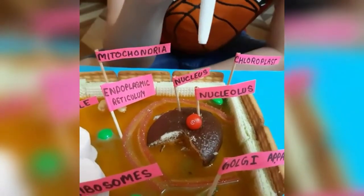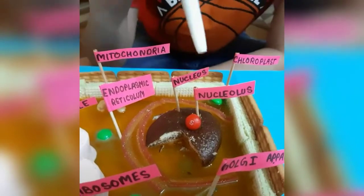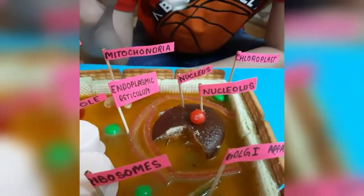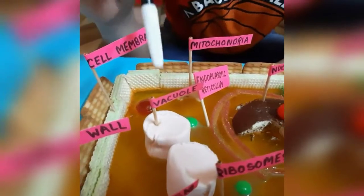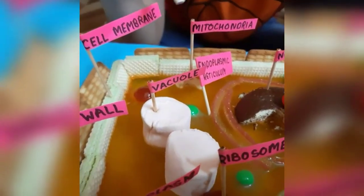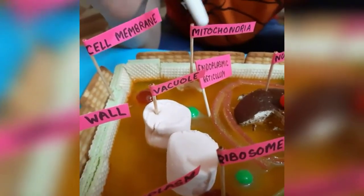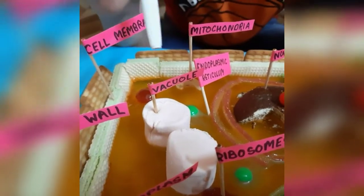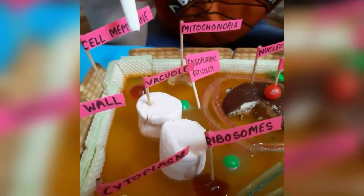Inside the nucleus is the nucleolus, represented by a Skittle. And then somewhere there is the storage vacuole, represented by a marshmallow. The vacuole stores water, food, and waste for the plant cell.